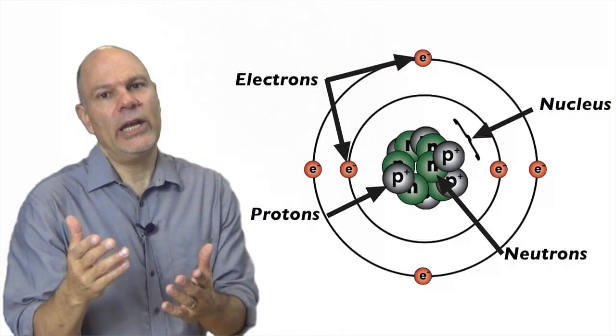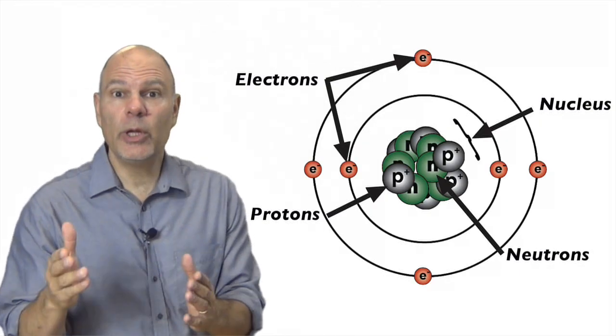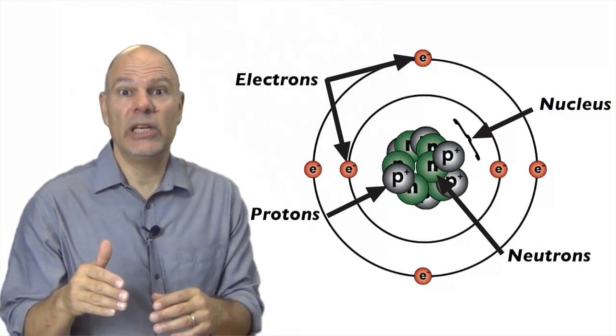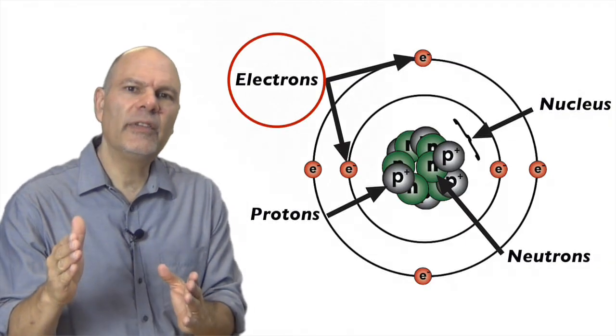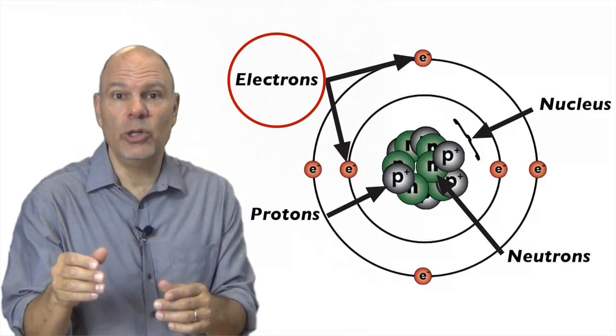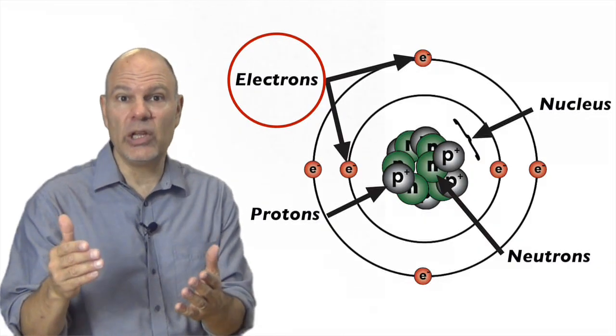In our last video, I introduced a simple model of the atom, the building block of all matter. All atoms have a dense nucleus made up of positively charged protons and neutral neutrons. Negatively charged electrons orbit outside the nucleus in what are called orbitals, shells, or energy levels.